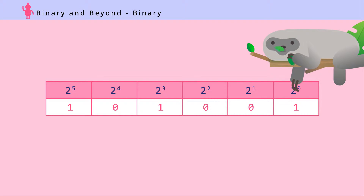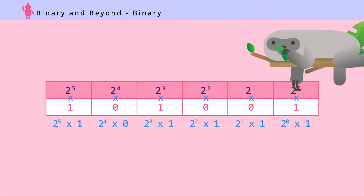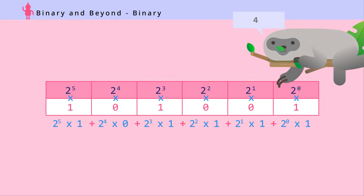Step three: multiply the place value with the binary digit to get the actual value of each place. Step four: add them all up. Mr. Sloth is 41 months old.